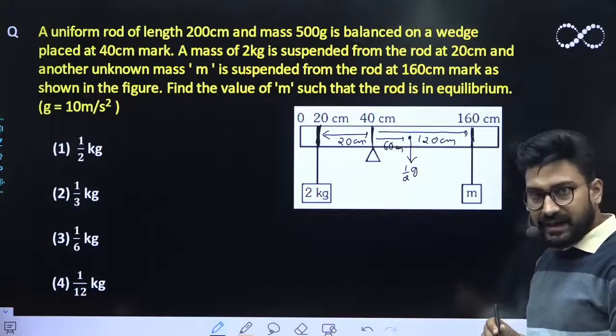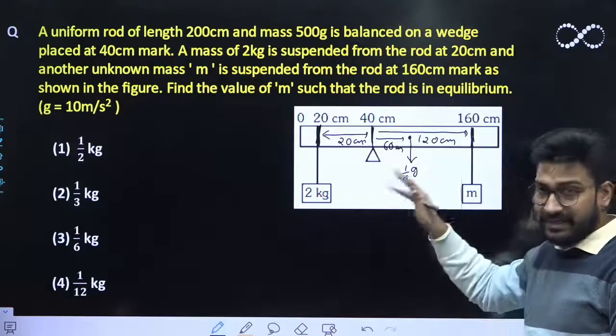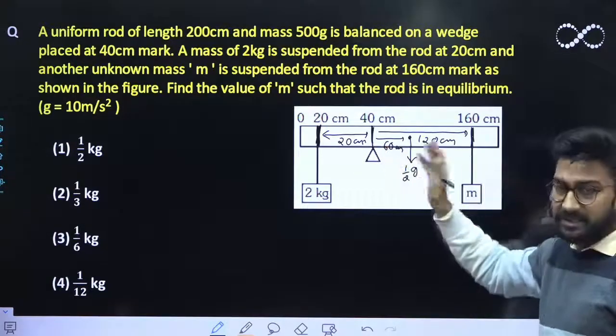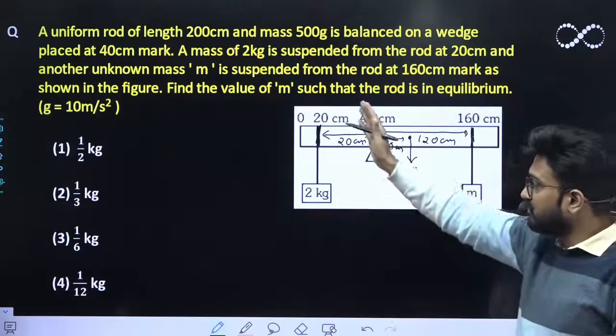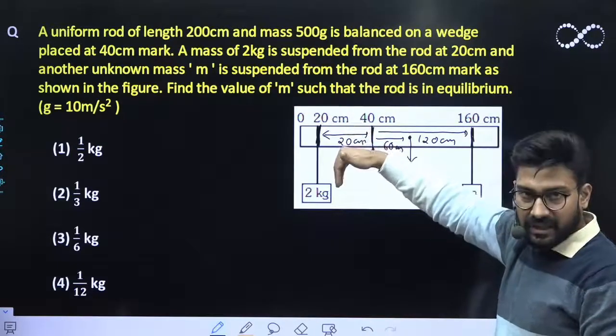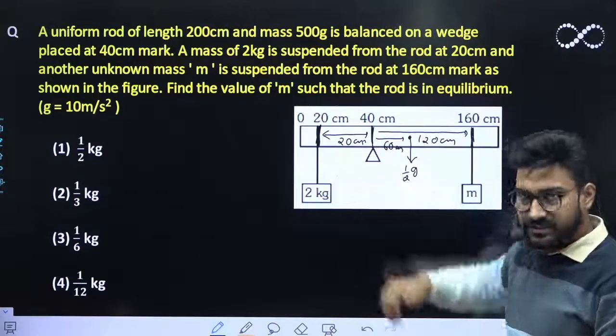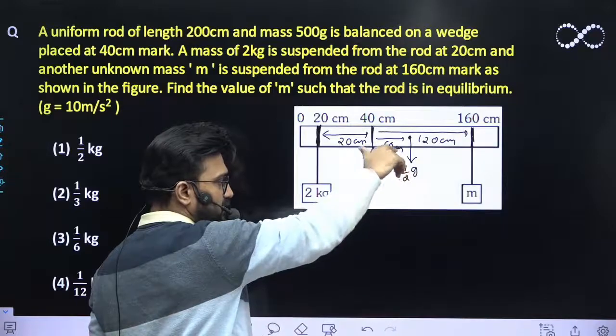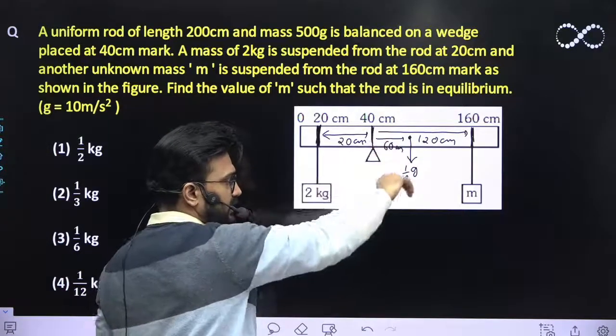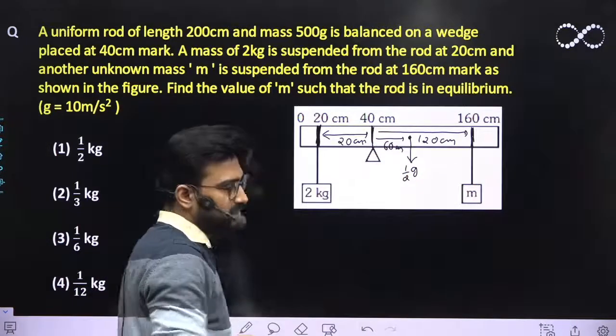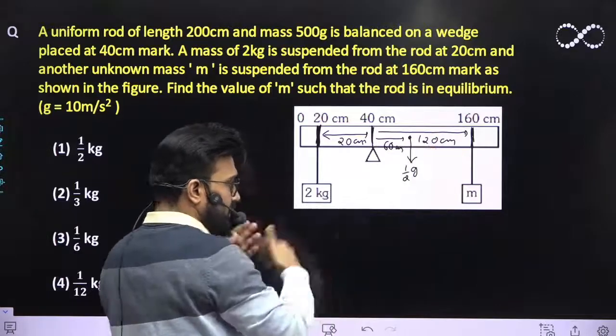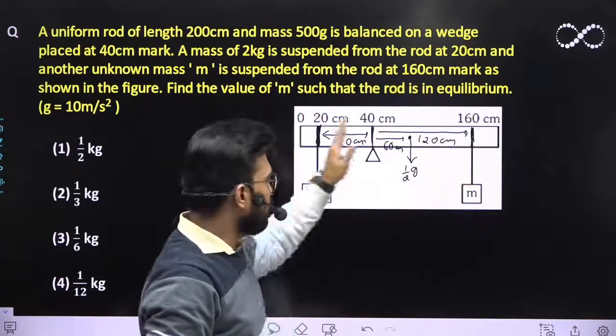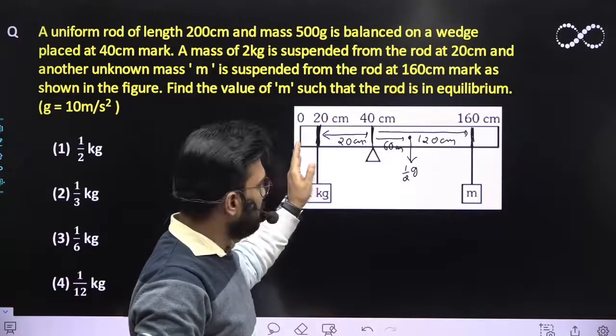Since it is not rotating, it is in equilibrium, so the net torque acting on the system must be zero. The torque because of this 2 kg rod is anti-clockwise, and the torque because of the mass of the rod is clockwise. The torque because of this small m mass is also clockwise. So these two clockwise torques will balance out this anti-clockwise torque.